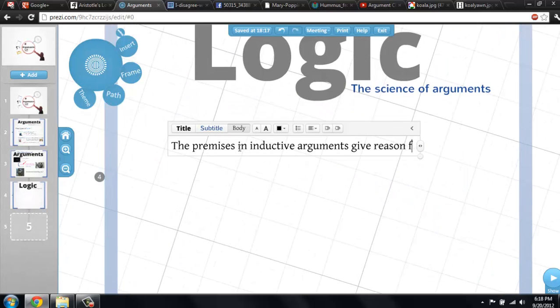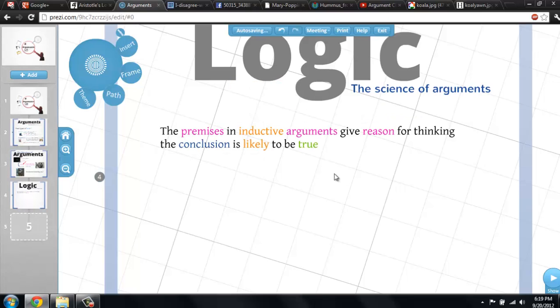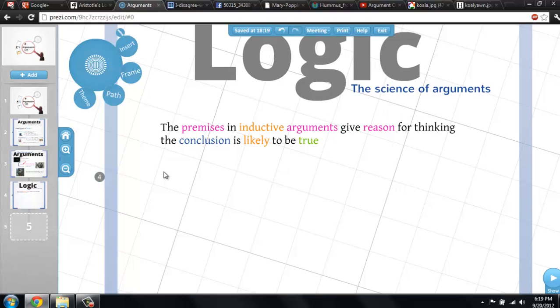One class of arguments are called inductive arguments, where the premises give reasons for thinking that a conclusion is likely to be true. This class of arguments is especially important to science, where nearly all the conclusions are generated through some kind of inductive reasoning.